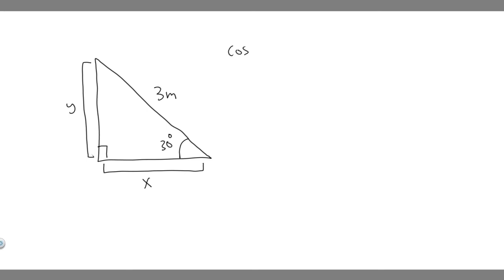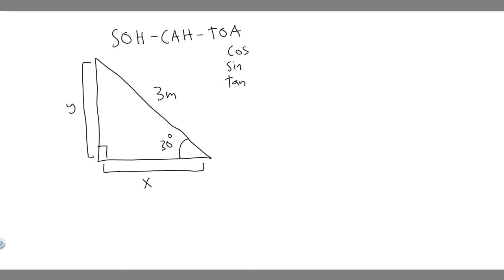There are three main trig functions, which are cosine, sine, and tangent. There's something else you should know, which is the saying SOHCAHTOA. The S, C, and T all stand for the first letters of these trig functions. The things next to them stand for one of the sides: O stands for opposite, H stands for hypotenuse, and A stands for the adjacent side.